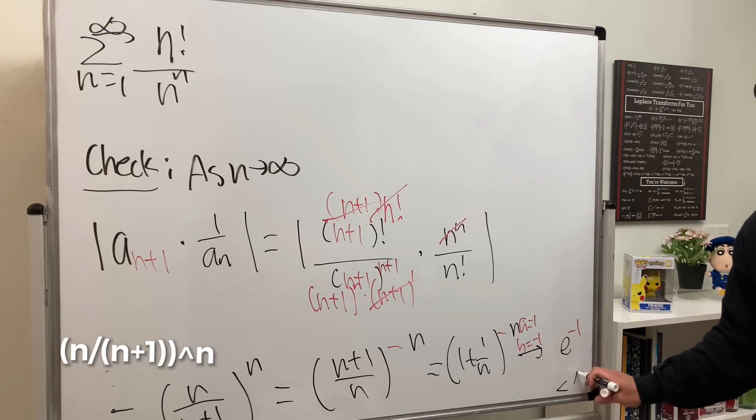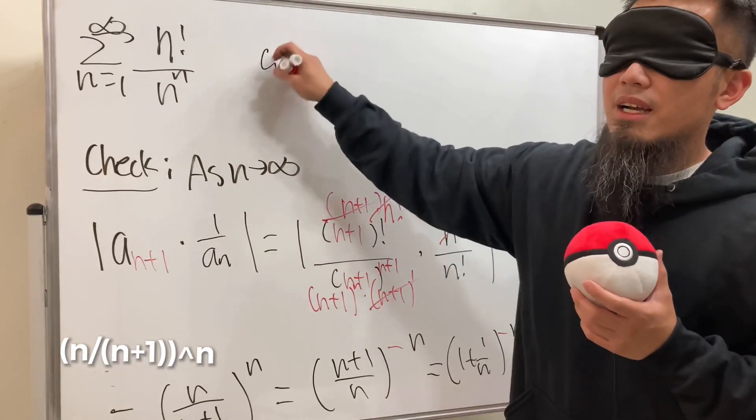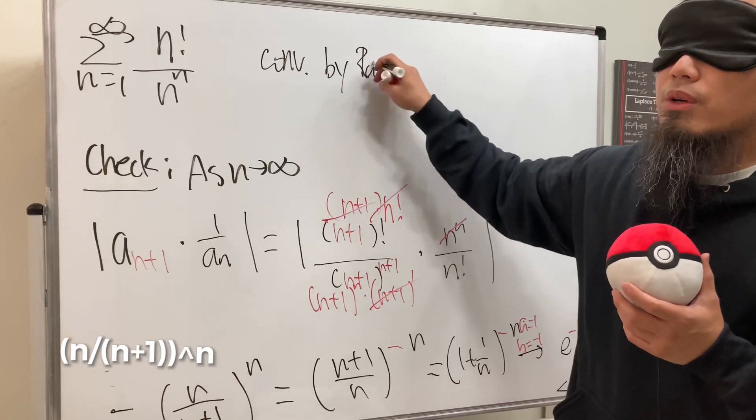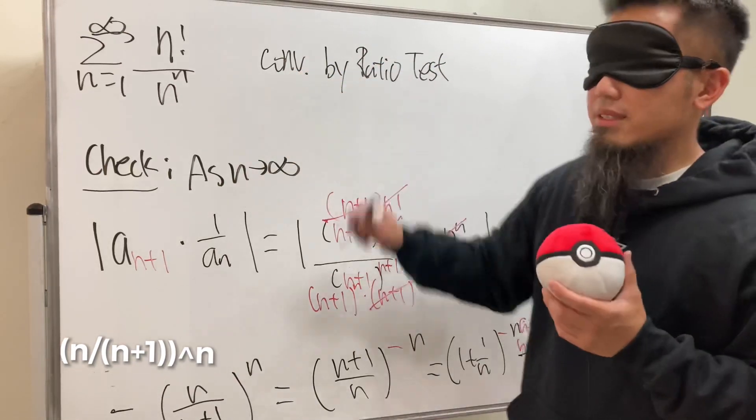Which is less than 1, and this is the good idea. This is the good news because we can come back here somewhere and say that this guy converges by the ratio test. Ratio test.